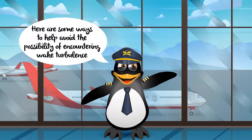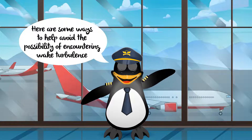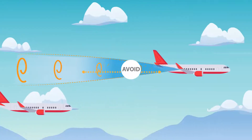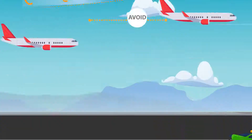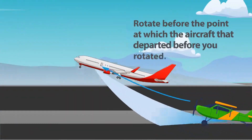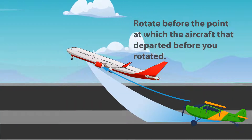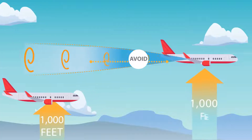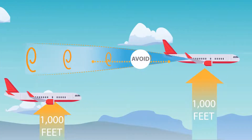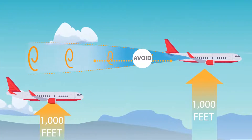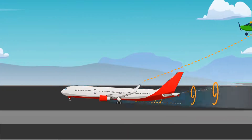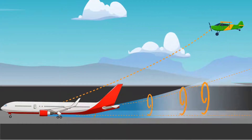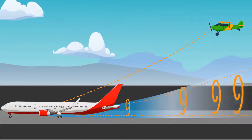Here are some ways to help avoid the possibility of encountering wake turbulence. Avoid flying through another aircraft's flight path. Rotate before the point at which the aircraft that departed before you rotated. Avoid following another aircraft on similar flight paths within an altitude of 1,000 feet. Approach the runway above the flight path of the aircraft in front of you and touch down after the point at which the other aircraft landed.